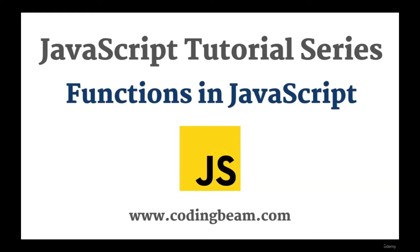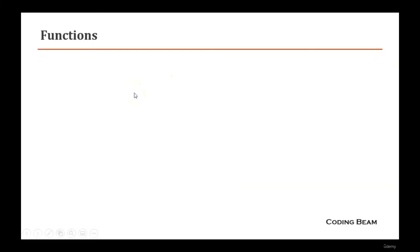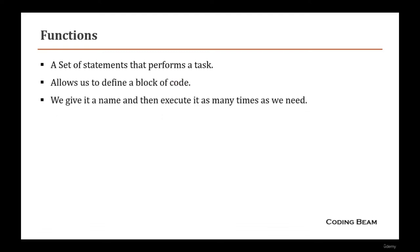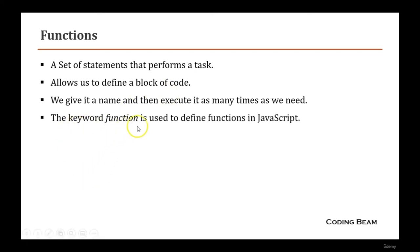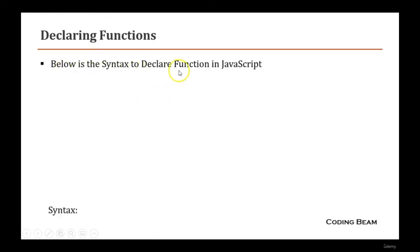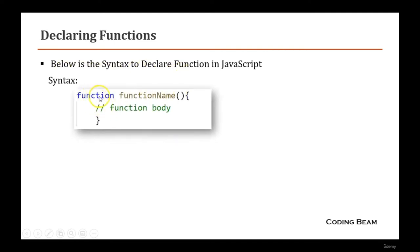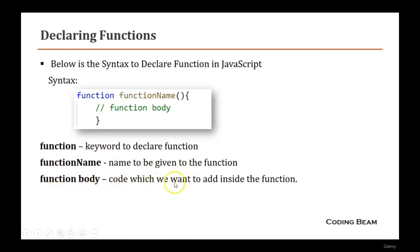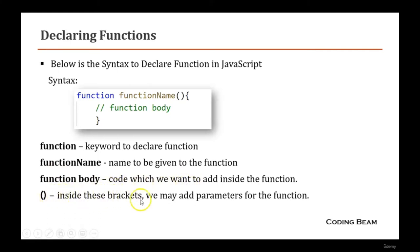Functions are a set of statements that perform a task. They allow us to define a block of code, give it a name, and execute it as many times as needed. The function keyword is used to declare functions in JavaScript. The syntax includes the function keyword, the function name, optional parameters in parentheses, and the function body.